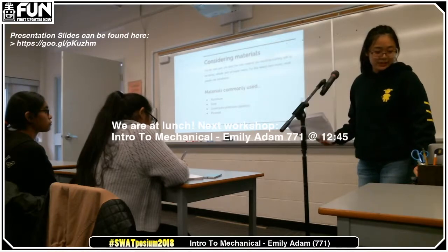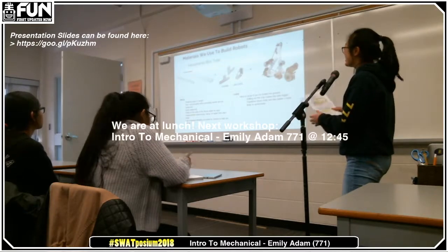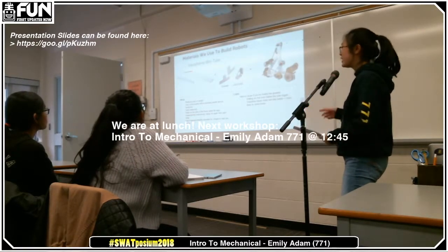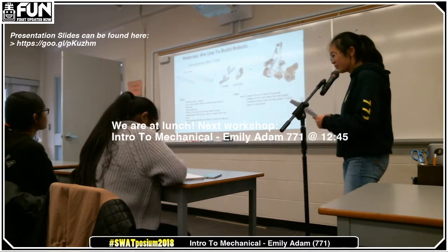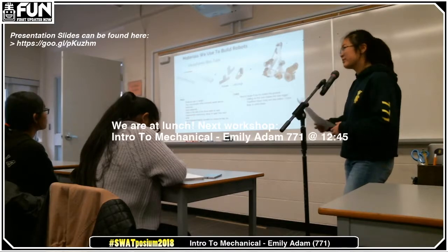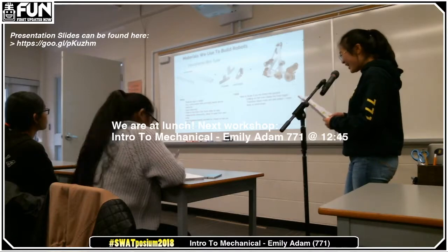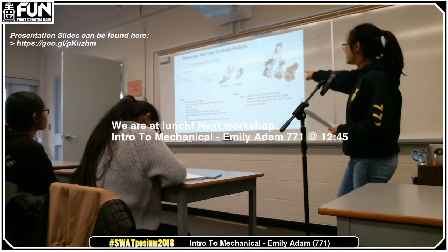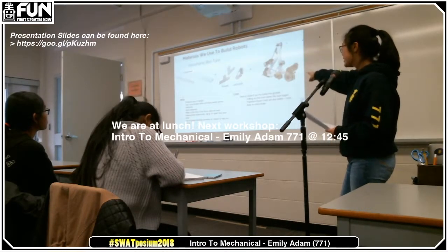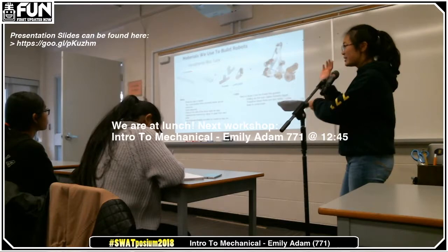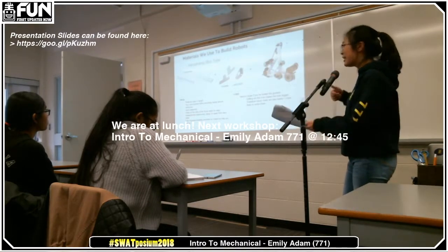The most common structural material you'll see in FRC is VersaFrame slash BoxTube, which you can buy off VEX Pro. VersaFrame is relatively light and very strong. They use gussets — VEX Pro sells a variety — to fasten together two pieces of VersaFrame, and you line them up with the holes along the side of the VersaFrame and fasten them with rivets. This method of assembly is very quick and very clean because it gives you some precision.